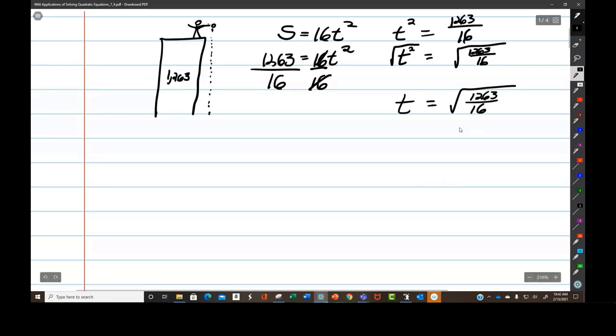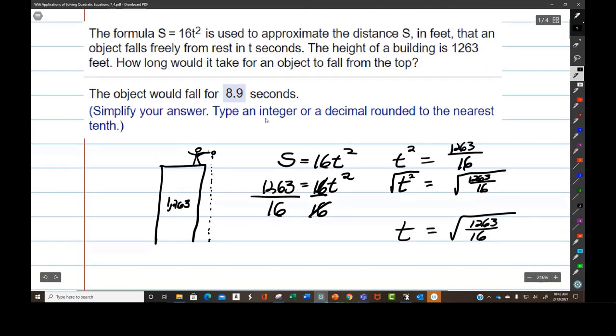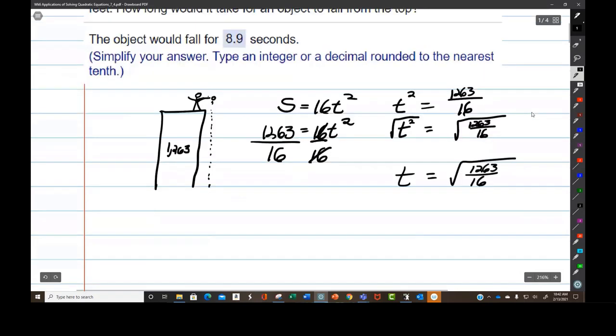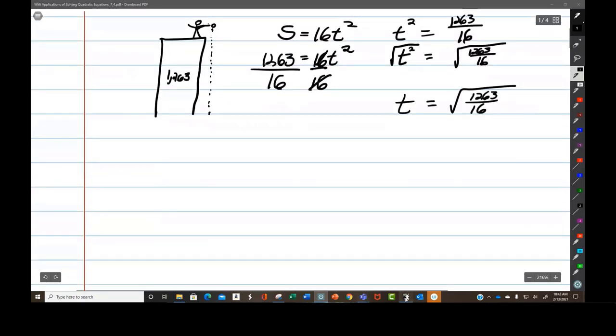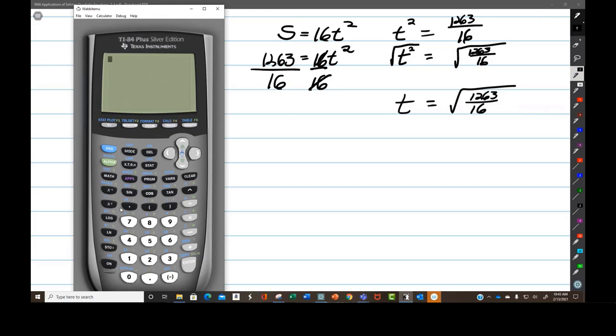We're going to take the square root of this and then round it to however many places. Type an integer or a decimal rounded to the nearest tenth. A tenth is one decimal place. So let's go ahead and do this. Second x squared gives me that. I'm going to say 1, 2, 6, 3 divided by 16, enter. That's what I get.